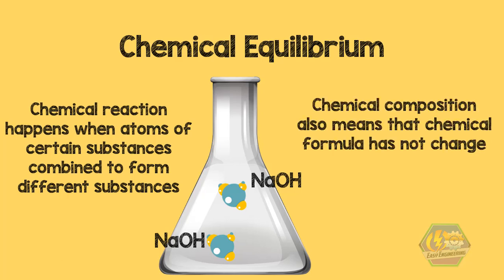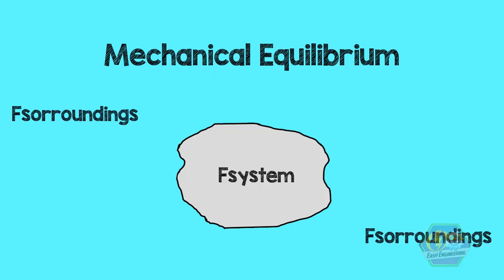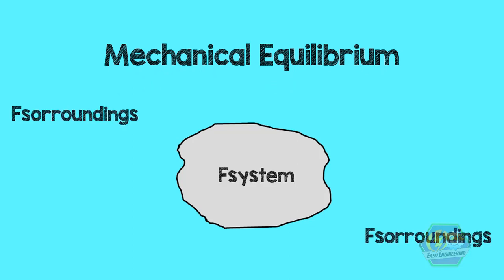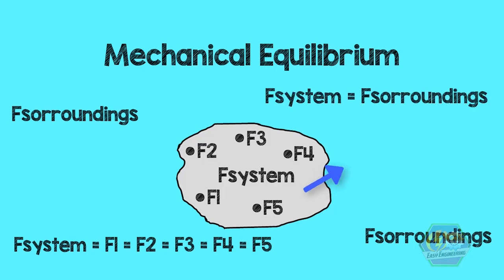Now let's move to mechanical equilibrium. When a system is in mechanical equilibrium, it means that there are no unbalanced forces within the system — the force is the same within all points of the system — and there must also be no unbalanced forces between the system and its surroundings.